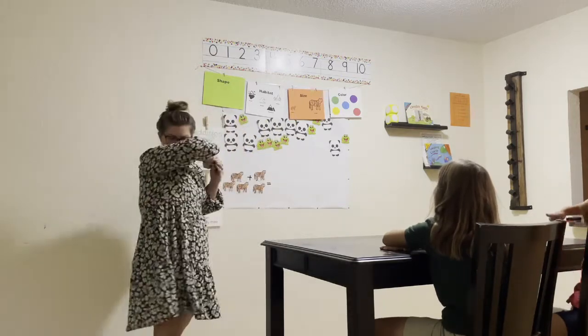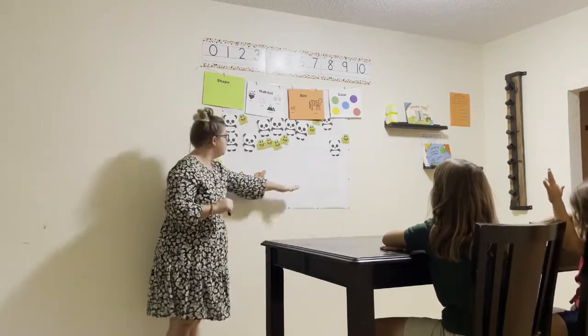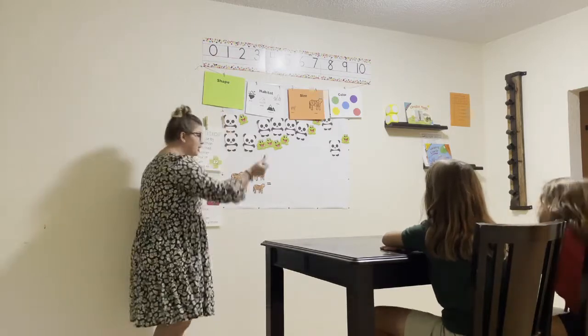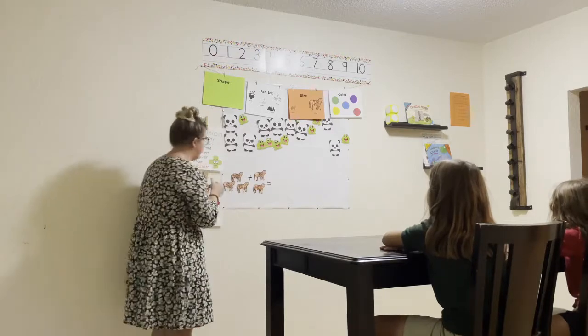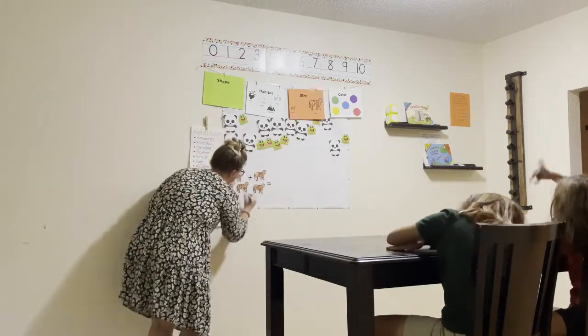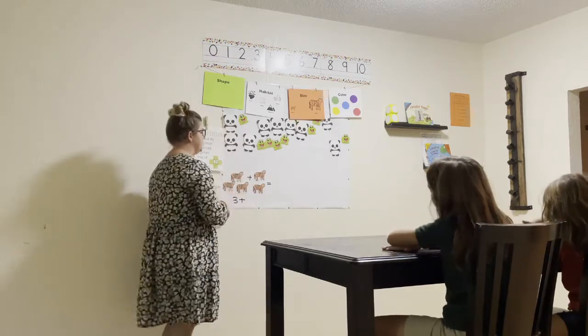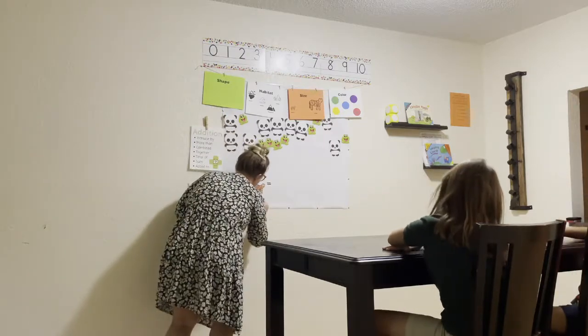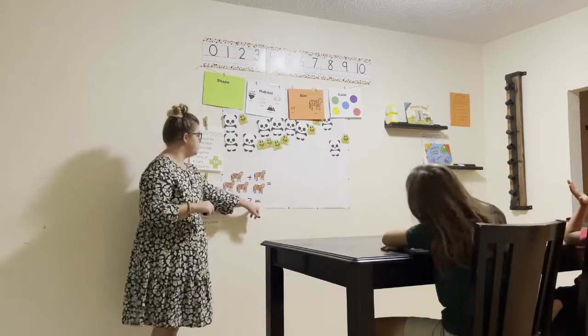So now we're going to count them together so that we can get the sum, the total. All right. So get ready. Go. One, two, three. Wonderful. So we have three tigers. And then we're going to bring down that plus sign. Now we're going to count the next cluster. Get ready. Go. One, two. Perfect. So now we have two tigers. We have our equation set up. Three plus two equals.